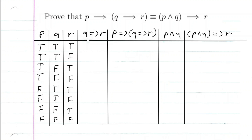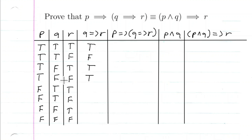Now we compute Q implies R. A true assumption leading to a true conclusion is logically valid. However, a true assumption leading to a false conclusion is not valid. A false assumption can lead to a true conclusion — that's the famous example where if you assume you can divide by zero, you can prove one equals two, which is logically valid from a false assumption. So: true implies true is true, true implies false is false, false implies true is true, and false implies false is true.